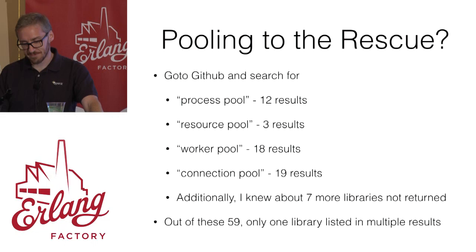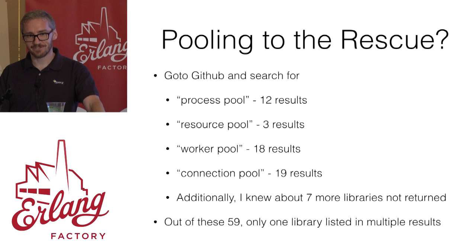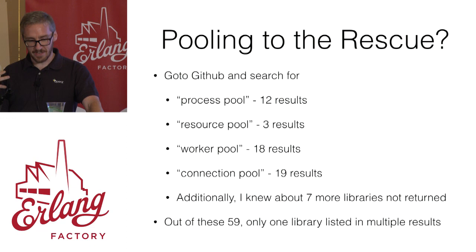I did what most people would do and searched GitHub, filtering by Erlang. I found 12 results for 'process pool', 3 for 'resource pool', 18 for 'worker pool', and 19 for 'connection pool'. Looking through them, I knew of at least seven other libraries not in those results. In total I found 59 libraries, and only one library appeared in multiple search results — and not even the one I would have expected.